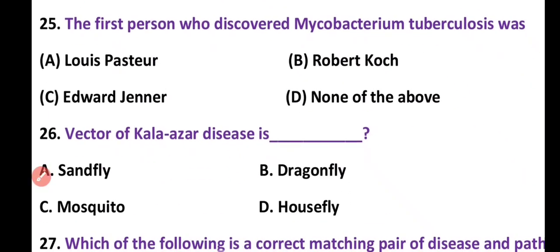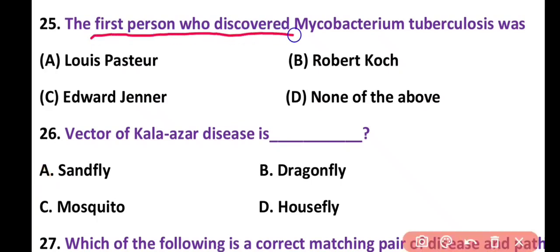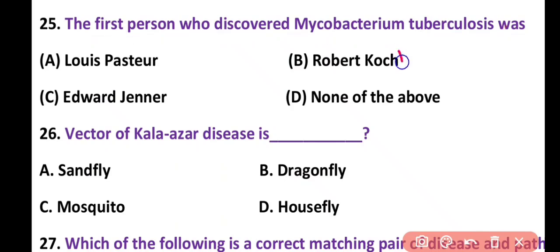Question 25. The first person who discovered mycobacterium tuberculosis was: Louis Pasteur, Robert Koch, Edward Jenner, or none of the above. Correct answer is option B. Robert Koch was the first person who discovered mycobacterium tuberculosis, which causes TB.